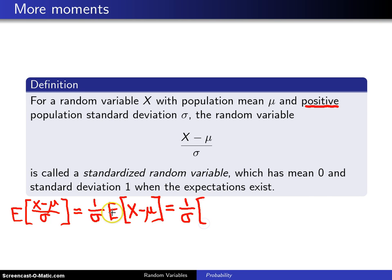So this becomes the expected value of x minus the expected value of mu. Well the expected value of x is just mu, and when you take the expected value of mu that's a constant you also get mu. So this is 1 over sigma times 0 which is 0, and that gives you the first result. This random variable right here has mean 0.